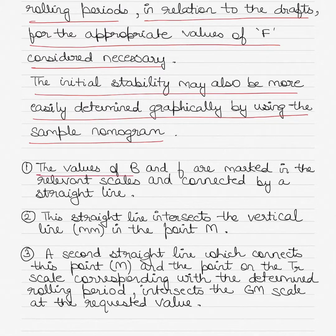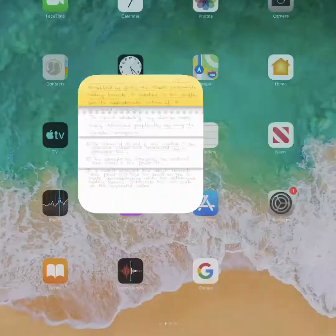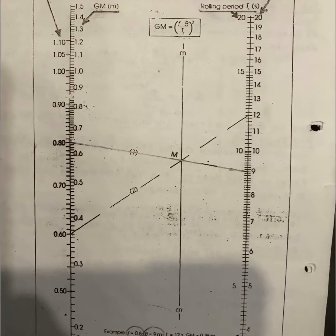The values of B and F are marked in the relevant scales and connected by a straight line. This is breadth or B, this is rolling coefficient or F as you can see on your screen. The rolling coefficient is this scale here and the breadth is this scale here.